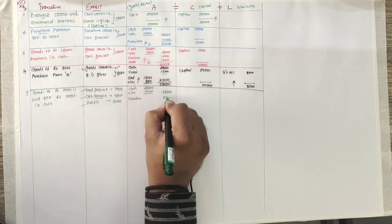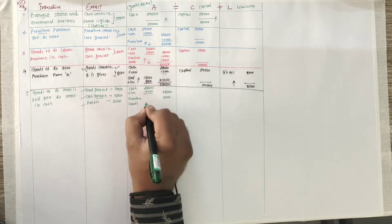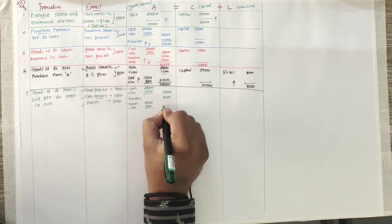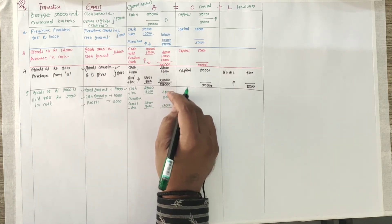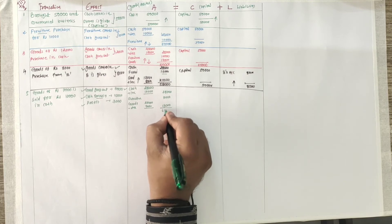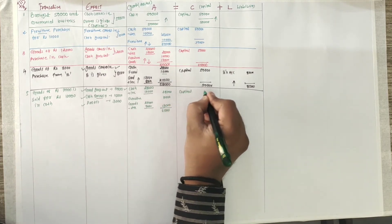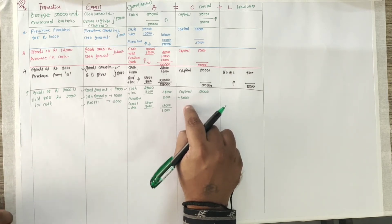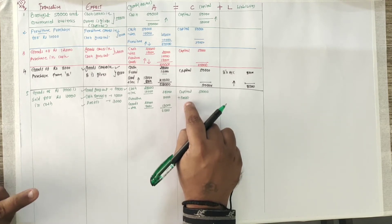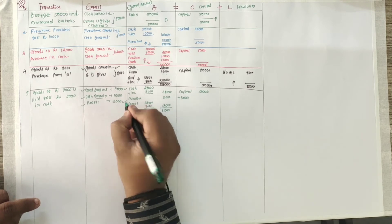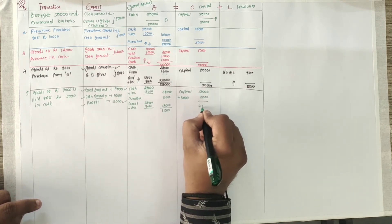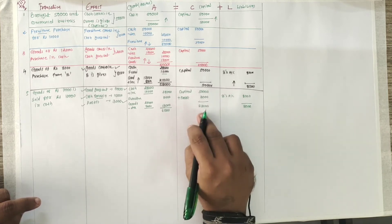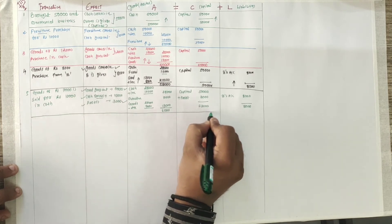Furniture remains 10,000 as before. Goods decrease by 7,000. Capital was 50,000; profit of 3,000 is added to capital. If profit happens, capital is plus. If loss, capital is minus. Other income is plus on capital; other expenses are minus on capital. So capital becomes 53,000. Liabilities B equals 8,000. So 53 plus 8 equals 61,000. The equation holds.